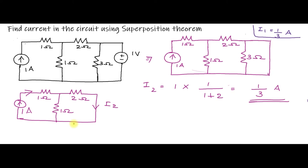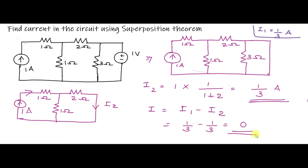Now determine the current through the 2 ohm resistor. Since i1 and i2 are in opposite directions, the net current i = i1 − i2 = 1/3 − 1/3 = 0 ampere.